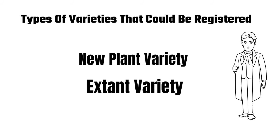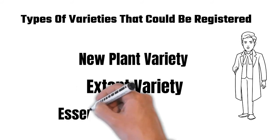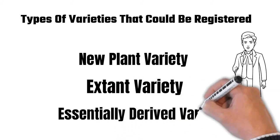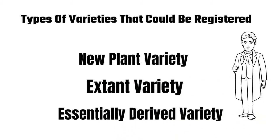The third category is essentially derived variety from a protected variety. As the name suggests, one of the parent plants has to be a protected plant variety. Anything derived from this, having a few characteristics that are distinct, qualifies as an essentially derived variety.